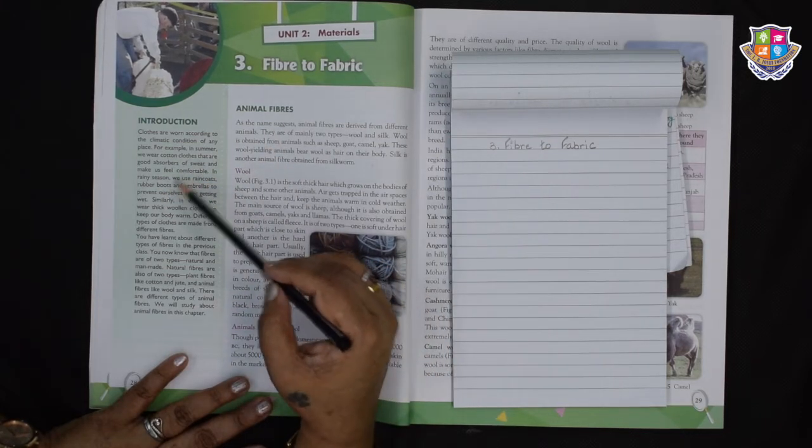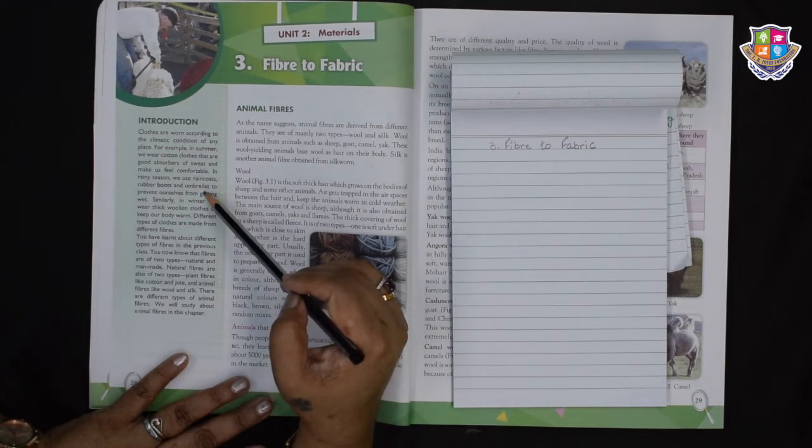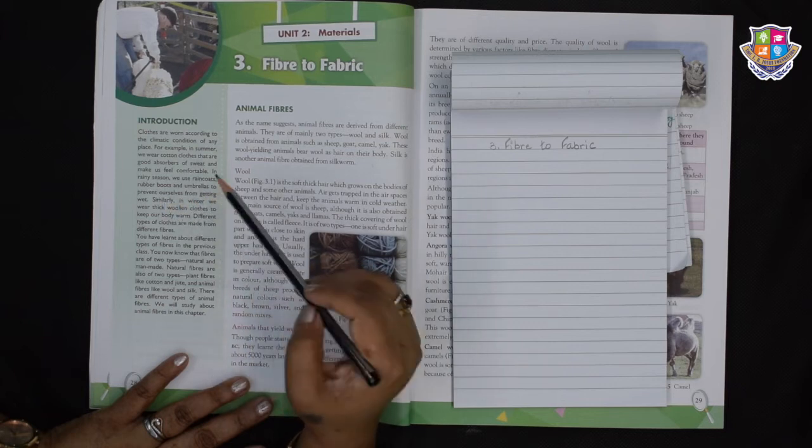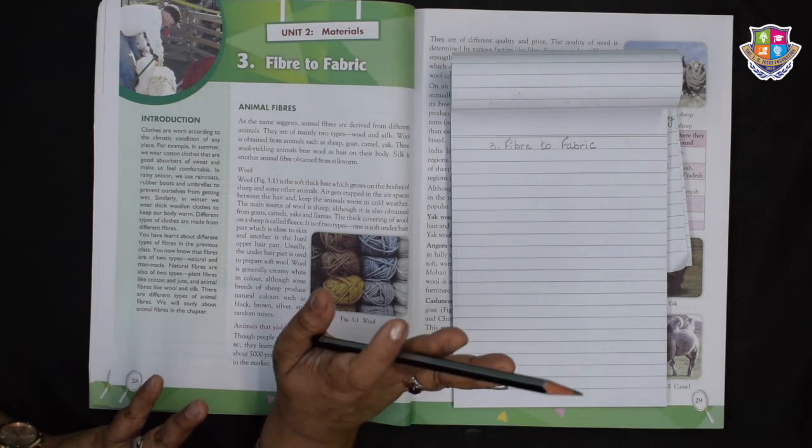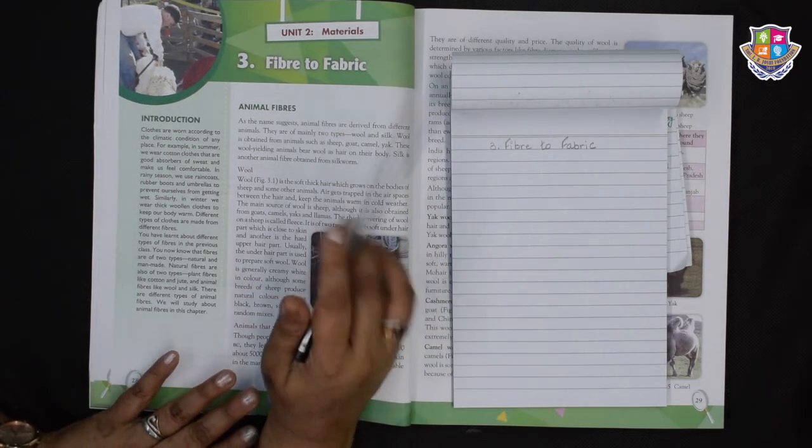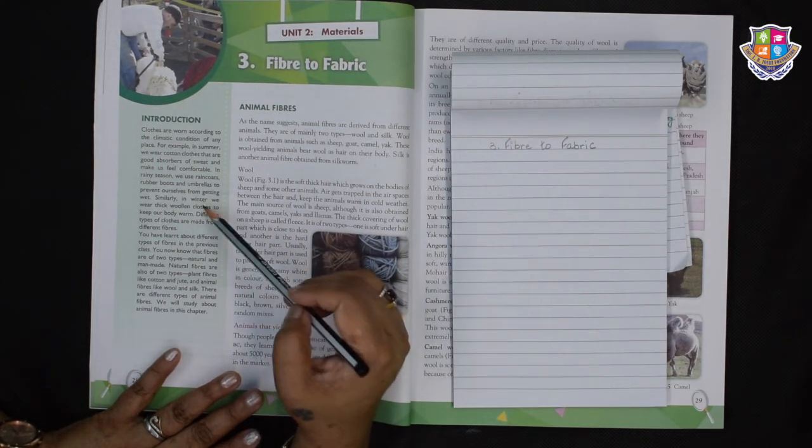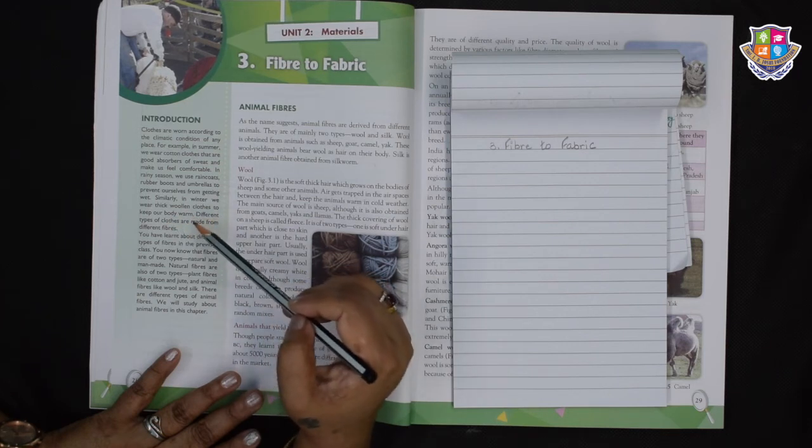In rainy season we use raincoats, rubber boots and umbrellas to prevent ourselves from getting wet. How lovely is the rain. We are all just waiting for rain I guess. Similarly in winter we wear thick woolen clothes to keep our body warm.